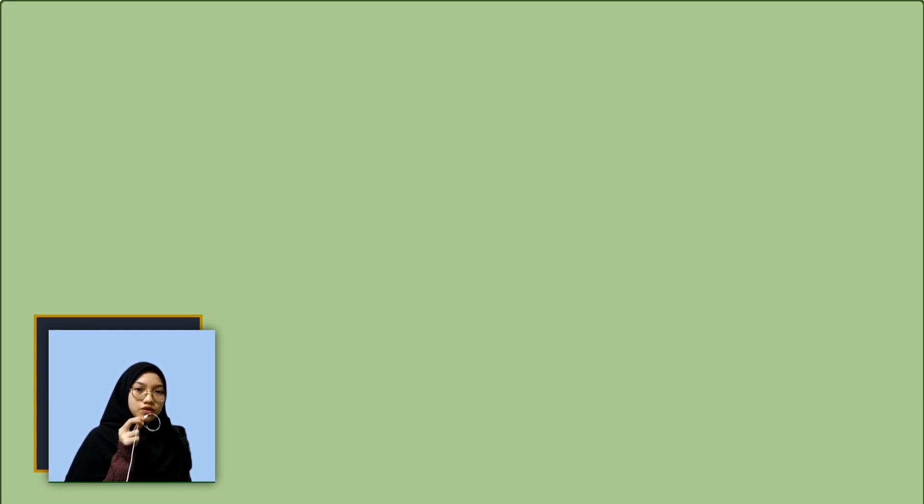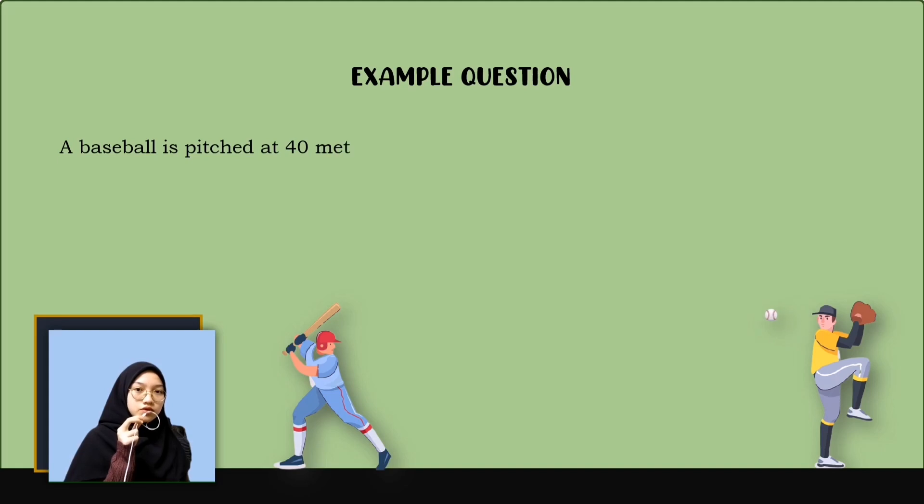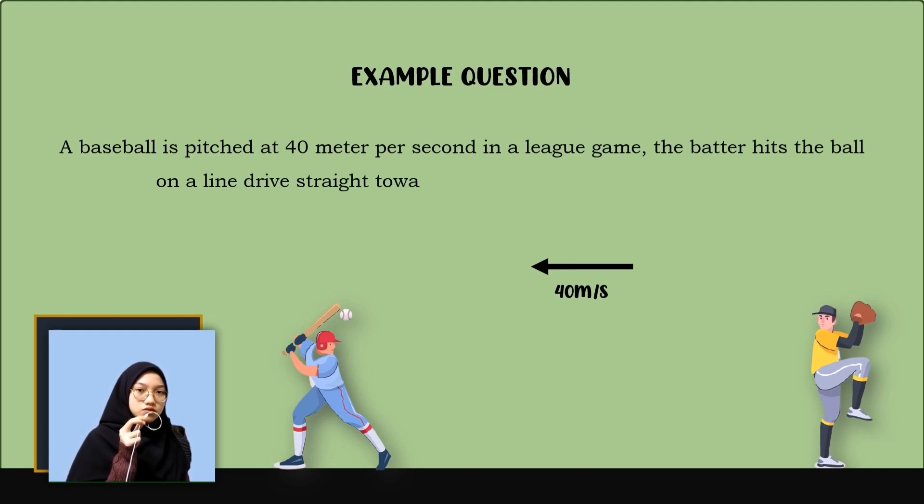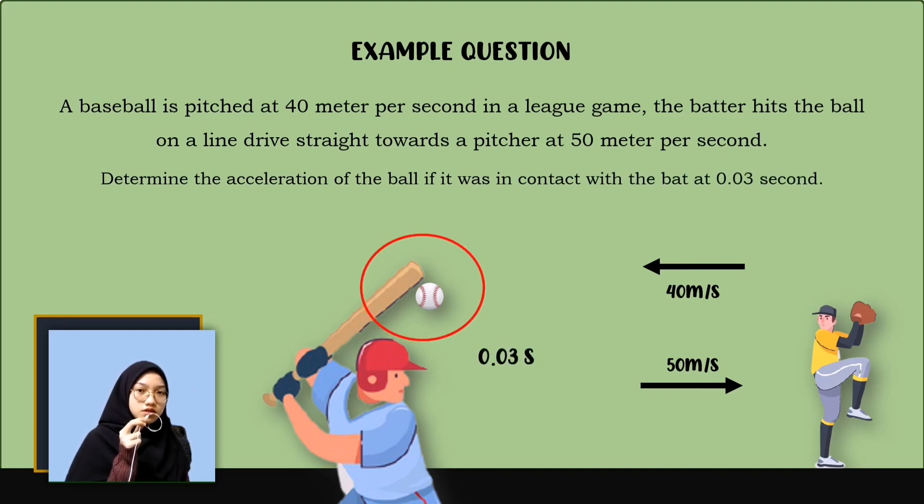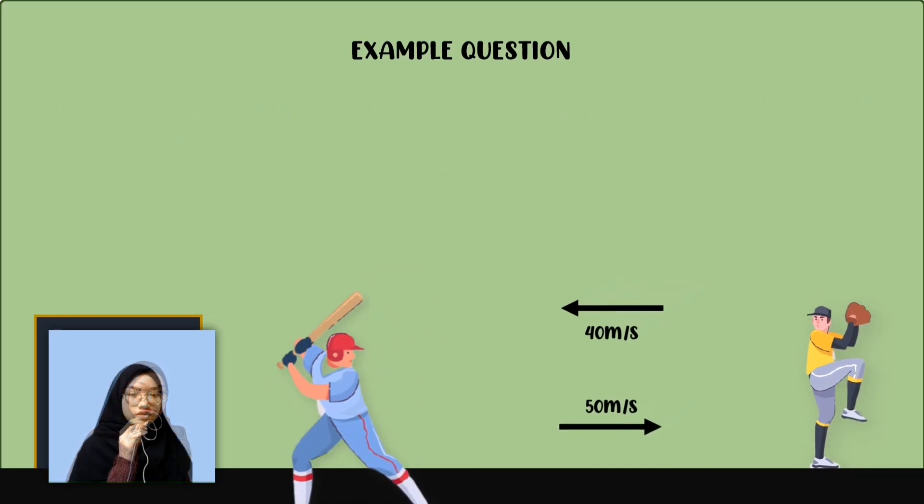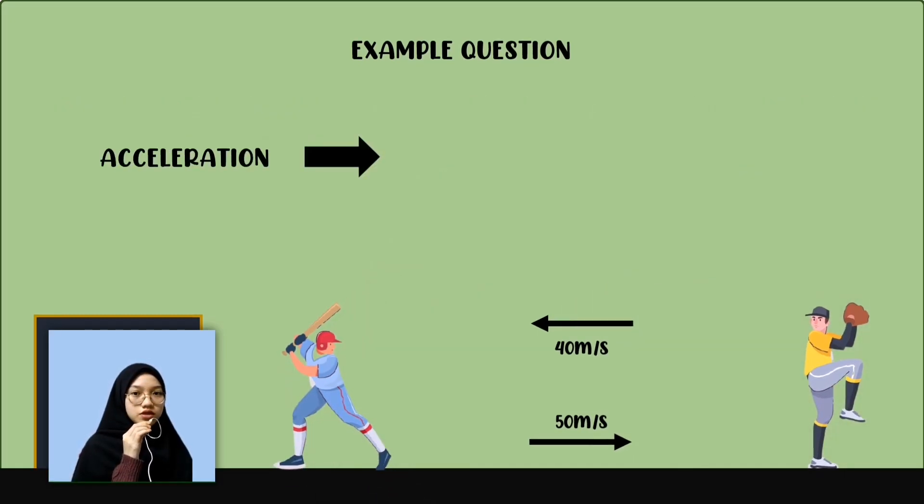Now we go for an example question. A baseball is pitched at 40 meters per second in a league game. The batter hits the ball on a line drive straight towards the pitcher at 50 meters per second. Determine the acceleration of the ball if it was in contact with the bat for 0.03 seconds.